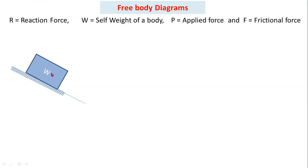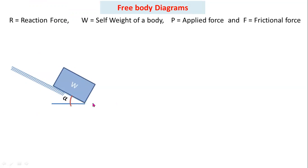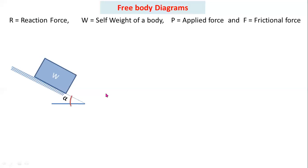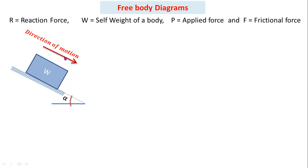Here, this is a block. W is the weight of the block, and the inclined plane makes an angle alpha with respect to the horizontal — this is the angle of inclination. If you are not applying any external forces, the block will move down. This is the direction of motion of the body under the freely moving condition.